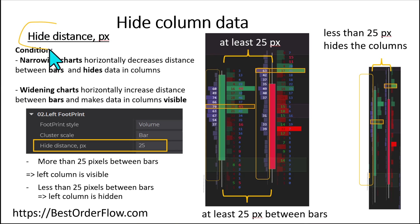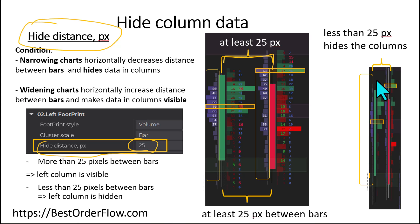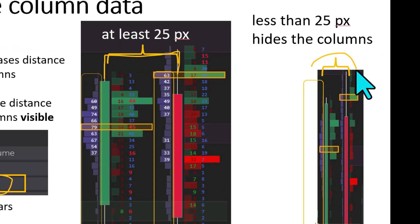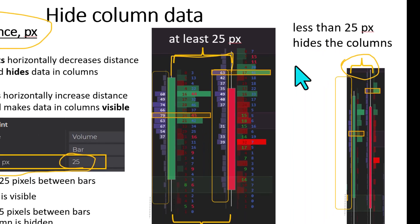We can decide in pixels the distance at which we hide or show the data. This is the height distance in pixels, currently selected as 25. That means between the bars there are at least 25 pixels for the data to be shown. If we squeeze the chart and there are fewer than 25 pixels between the bars, the data is no longer visible.